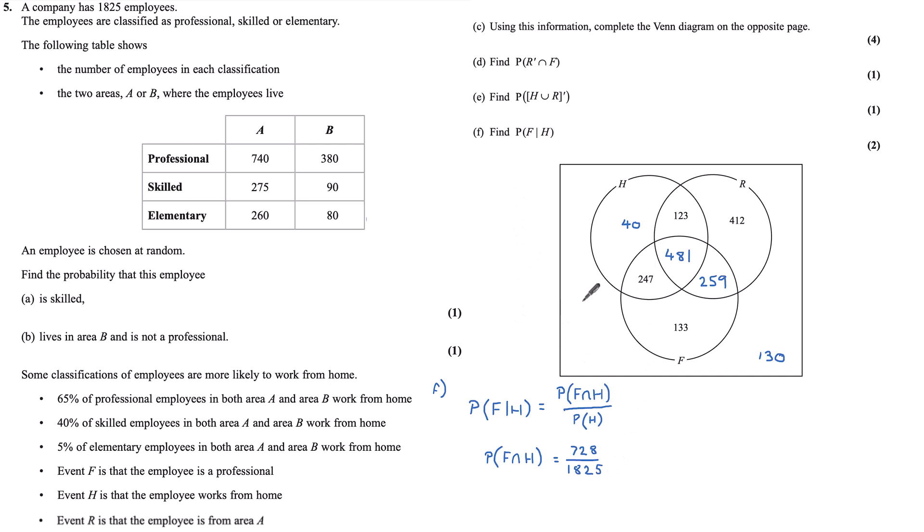And the probability of H is all the numbers in H here. So 40 plus 123 plus 481 plus 247, which is 891 over 1,825. Given that I have these two probabilities now, the probability of F given H is 728 over 891.